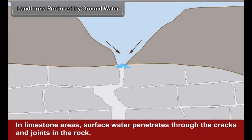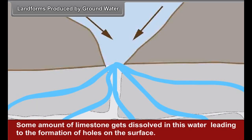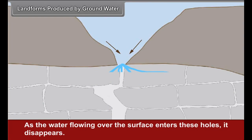Landforms produced by groundwater: In limestone areas, surface water penetrates through the cracks and joints in the rock. Some amount of limestone gets dissolved in this water, leading to the formation of holes on the surface. As this process continues for many years, the holes grow in size. Such holes are called sinkholes. As the water flowing over the surface enters these holes, it disappears, and may reappear on the surface at some distance ahead.